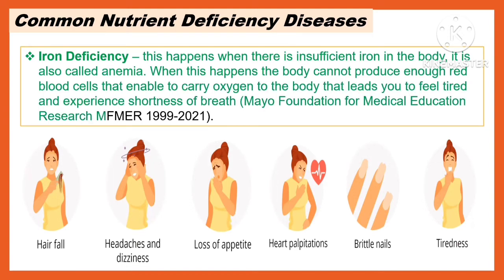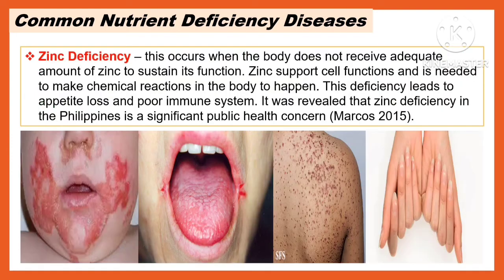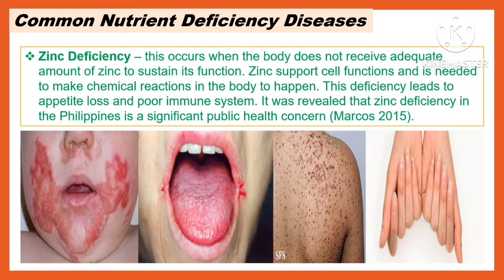The first common nutrient deficiency disease is iron deficiency. This happens when there is insufficient iron in the body, a condition called anemia. The body cannot produce enough red blood cells and is unable to carry oxygen to the body, leading you to feel tired and experience shortness of breath. Another common nutrient deficiency disease is zinc deficiency. This occurs when the body does not receive an adequate amount of zinc to sustain its function. Zinc supports cell functions and is needed to make chemical reactions in the body happen. This deficiency leads to appetite loss and poor immune system. Zinc deficiency in the Philippines is a significant public health concern.